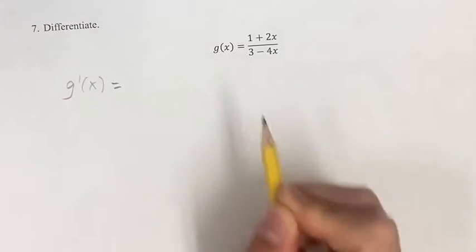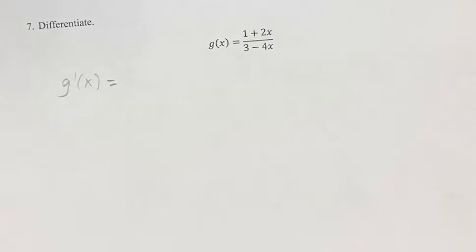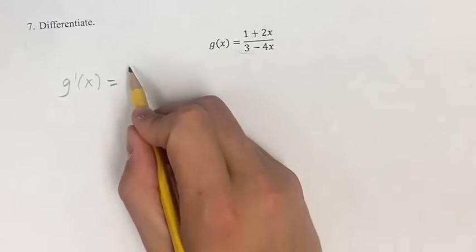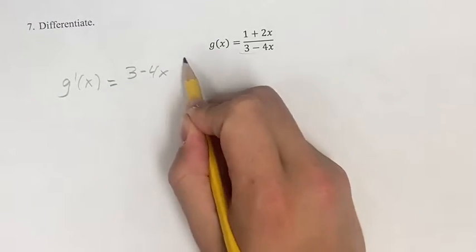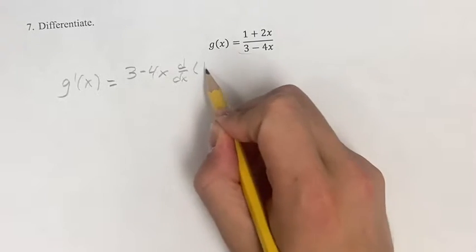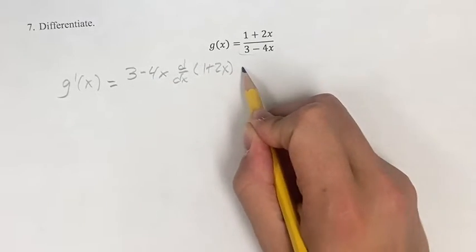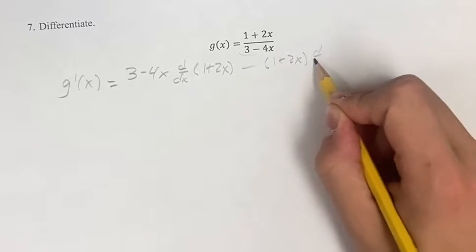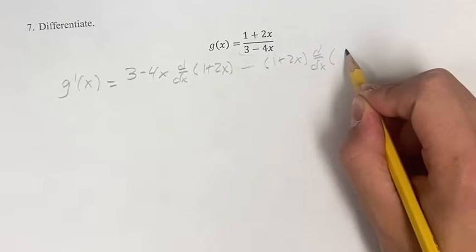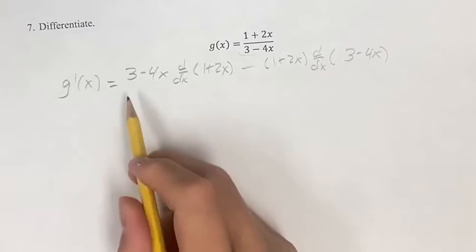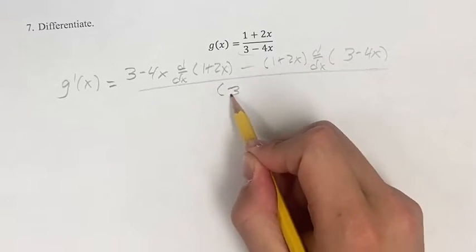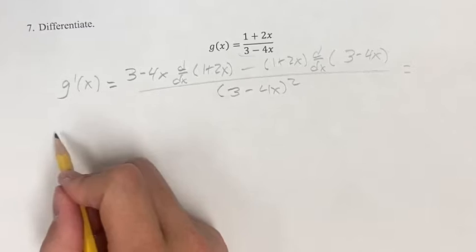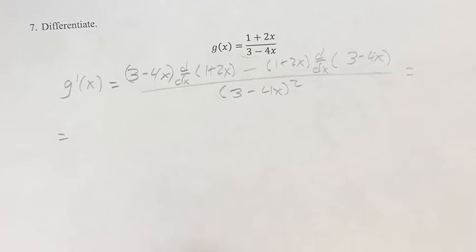Writing out the derivative right here, we're going to do this using the quotient rule, which starts with the denominator times the derivative of the numerator, minus the numerator times the derivative of the denominator. All of this is going to be over the denominator squared. Again, this is the quotient rule.